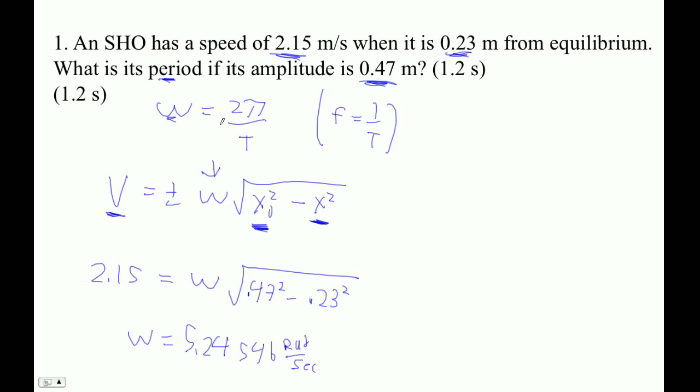And then if I want to find out what the period is, I can use this guy. Omega is 2π over T, so therefore T is 2π over omega. So period is 2π over omega.